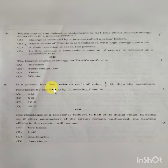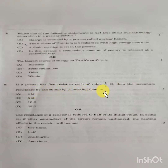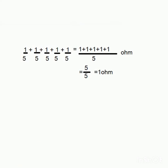Question 9: If a person has 5 resistors, each of value 1/5 ohm, then the maximum resistance he can obtain by connecting them is? By connecting all in series: 5 × (1/5) = 5/5 = 1 ohm. So the answer is 1 ohm — Option A is correct.